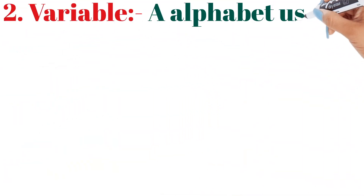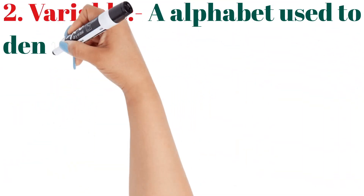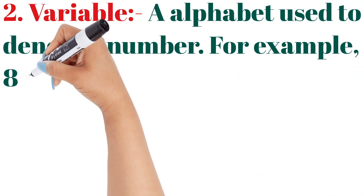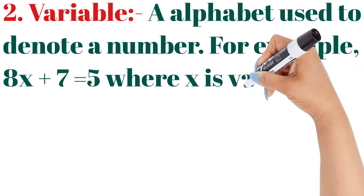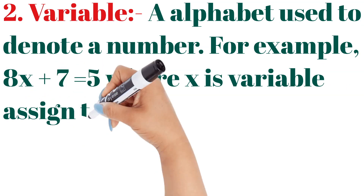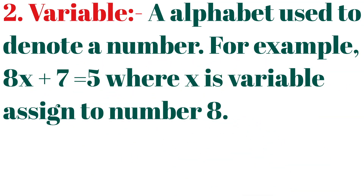Variable: an alphabet used to denote a number. For example, in 8x + 7 = 5, x is the variable. Whatever alphabet is used in mathematics like this, these are called variables.